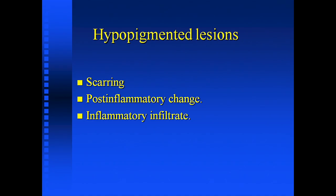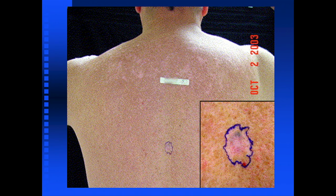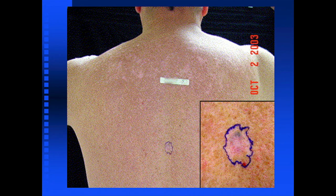Group two: hypopigmented lesion. You may see in the biopsy only scarring, post-inflammatory change — meaning melanin in the dermis or an inflammatory infiltrate. Here's an example of what this could look like. Notice that in this patient there's massive sun damage, clear hyper- and hypopigmentation. You can see there's whitening, something flesh-colored, and what looks like a little bit of dermal melanosis.